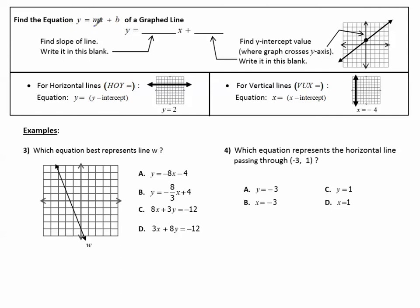Finding the equation, Y equals MX plus B of a graphed line, find the slope of the line, it goes in this first blank, this is the slope, usually called M. Find the Y-intercept value, that's where it crosses the Y-axis. That goes in that second blank. That's the Y-intercept. For a horizontal line, like we said, Y equals, because it crosses the Y-axis. For a vertical line, X equals, because it crosses the X-axis.